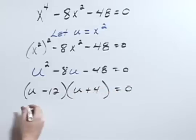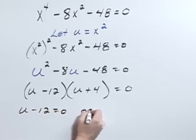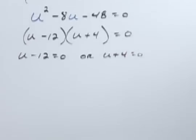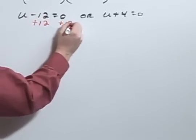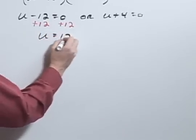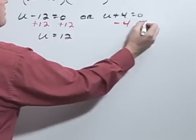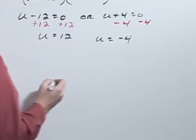Set each piece equal to zero gives us u minus 12 equals zero or u plus 4 equals zero. So we can add 12 to both sides to give us u equal 12 or we could subtract 4 from both sides to get u equal negative 4.